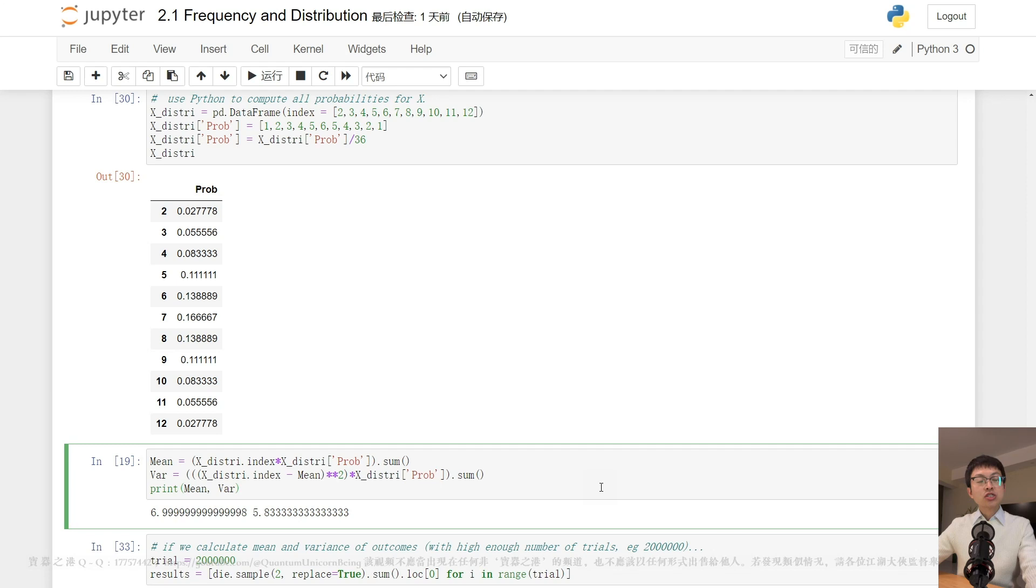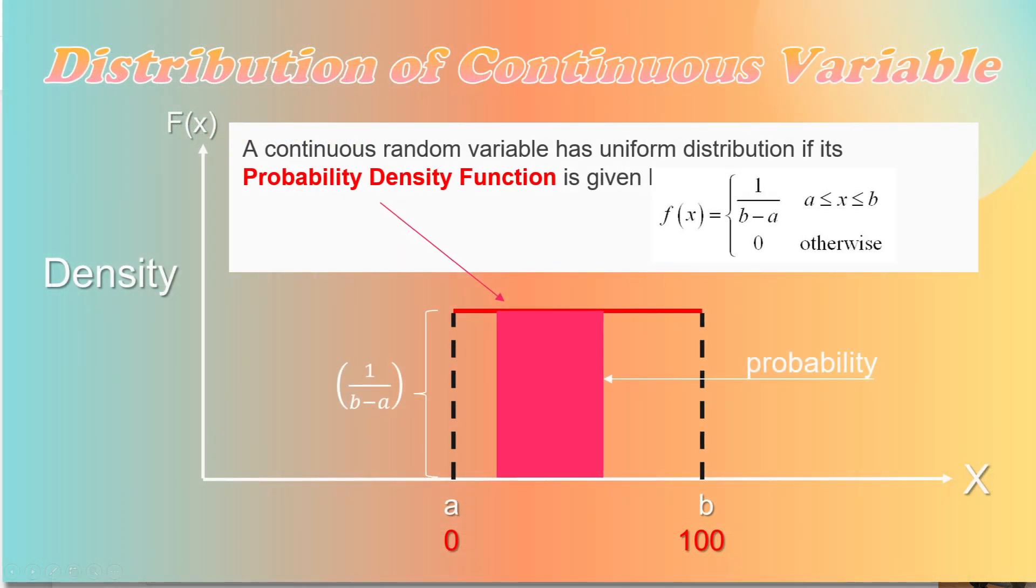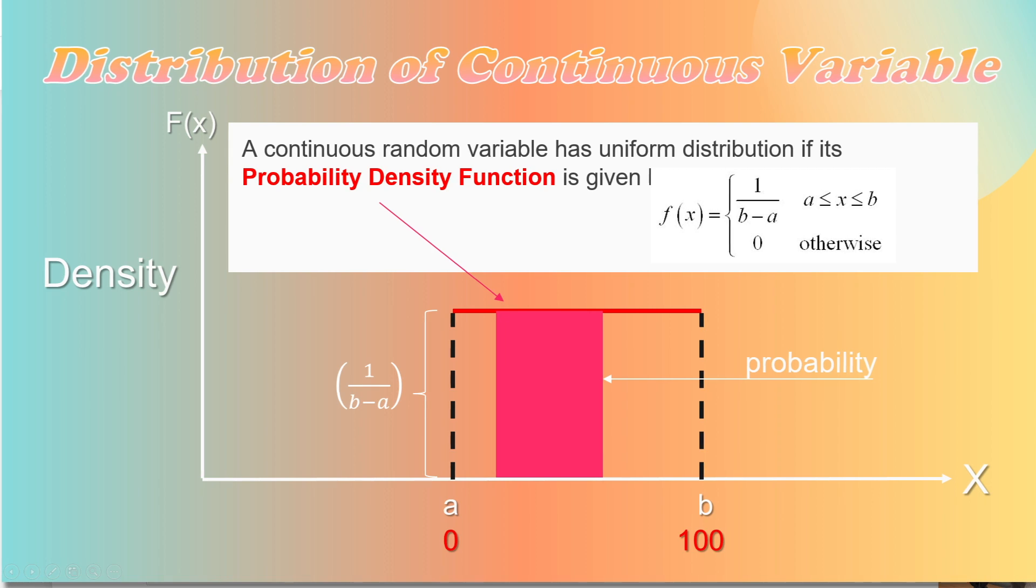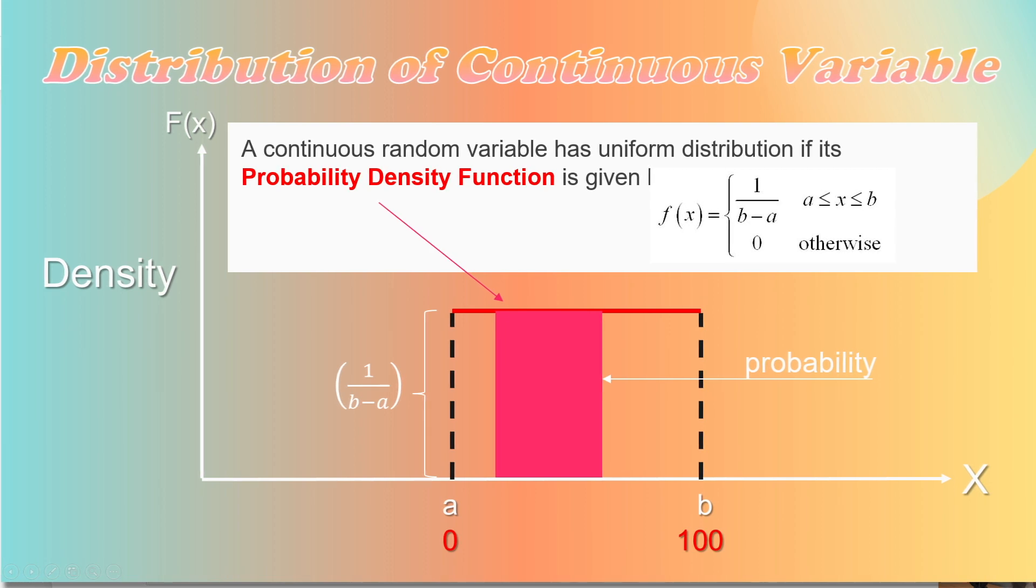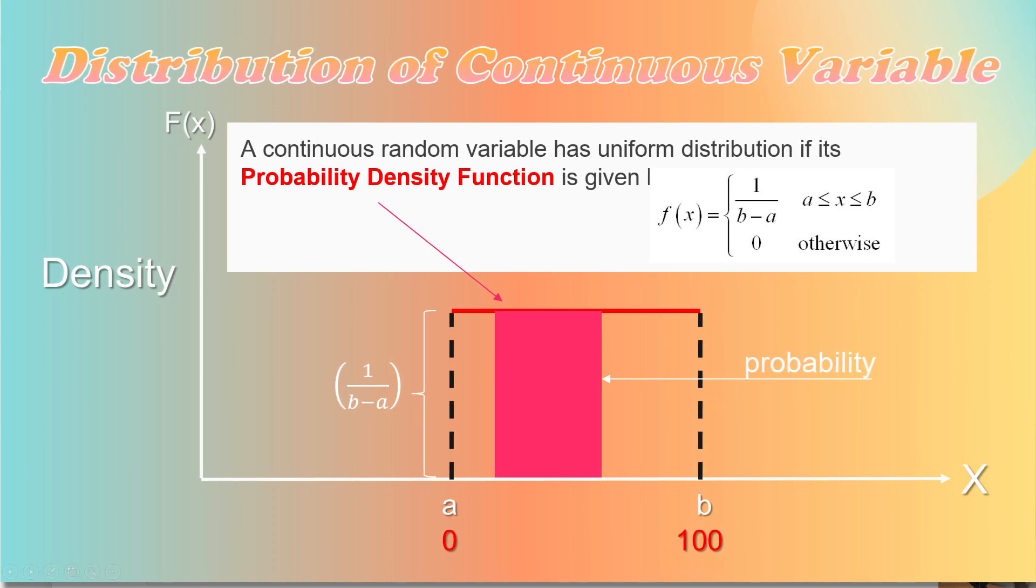Well, enough discussion of distribution for discrete random variables. Now, let's explore some basics of the distribution for continuous random variables. We will compute the probability for continuous random variables, starting with the simplest continuous random variable, which has a uniform distribution.